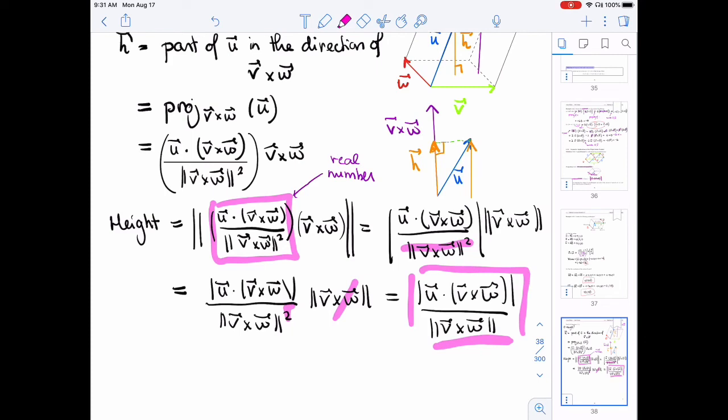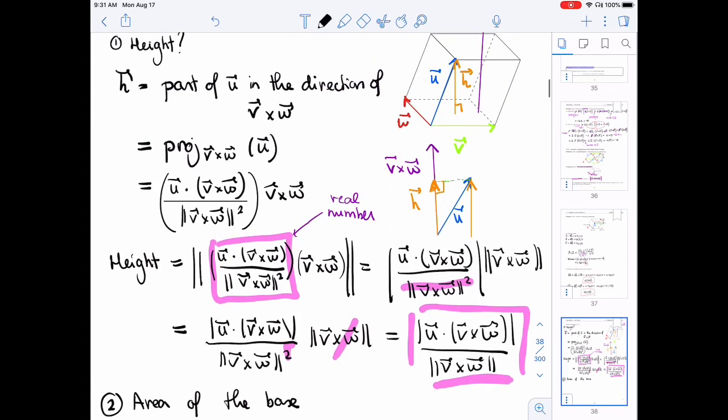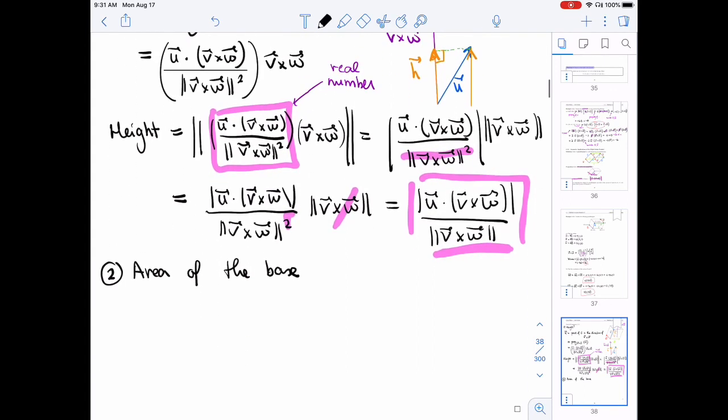To find the volume, we also need the area of the base. Well, the base is a parallelogram made up of v and w. So that's the length of v cross w since it's a parallelogram. Area of which is the length of v cross w.